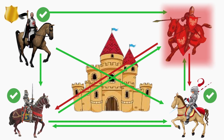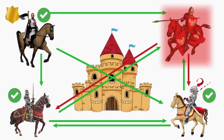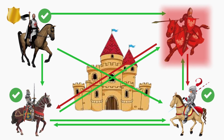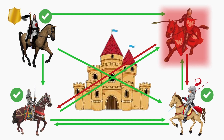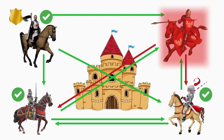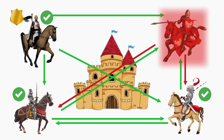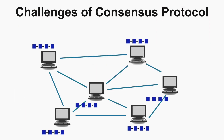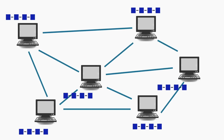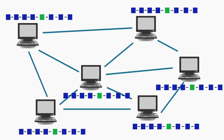Looking back at the Byzantine fault tolerant, the challenge for the generals was to understand which command to listen to — either attack or retreat. The consensus protocol for blockchain faces mainly two challenges. Number one is to protect the network from attackers. We already discussed the situation where attackers try to attack somewhere in the middle of the chain. If an attacker tried to tamper a block in the middle of the chain, it is almost impossible.